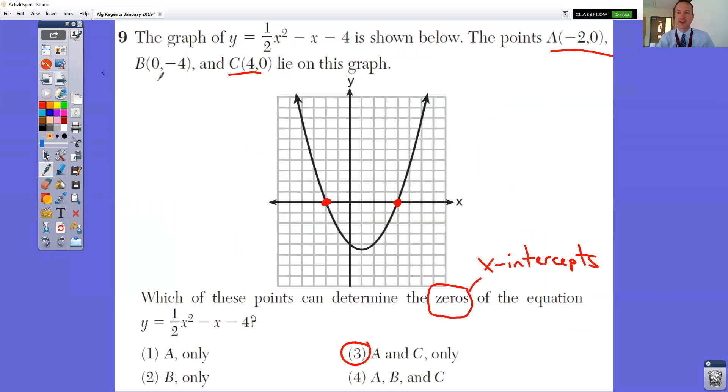In question number nine, this graph is shown below. The points negative two zero, which is this red dot, and four zero, and zero negative four lay on this graph. Zero negative four is right here in the blue. Which of these points can determine the zeros? The zeros are your x intercepts. So that is this point and that is this point. That's where the line crosses the x axis. So it would be A and C, because that would be negative two zero and four zero. This is not a zero, this is where it crosses the y axis.